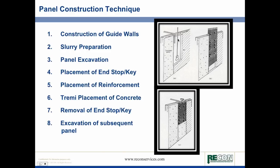You construct the panel, as illustrated here, excavated underneath the slurry so the trench is supported. You place an end stop to separate the panel from the secondary panel that will be excavated next. If it's a structural wall, you place reinforcement — either rebar or steel beams. Then you place the concrete from the bottom up; as the concrete rises in the panel it displaces the slurry, which you collect and clean. Then you remove the end stop and excavate subsequent panels. You may skip one panel and come back, so the next panel is adjacent to the previous concrete panel.